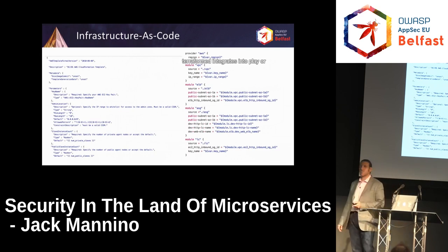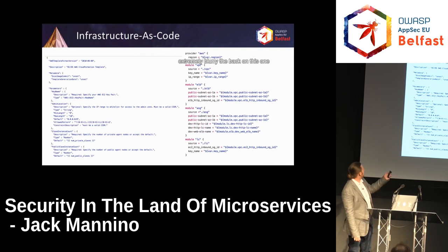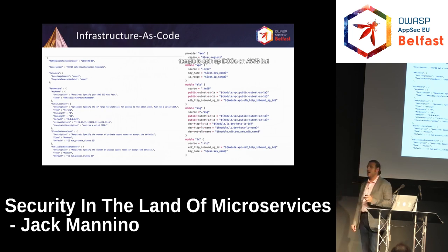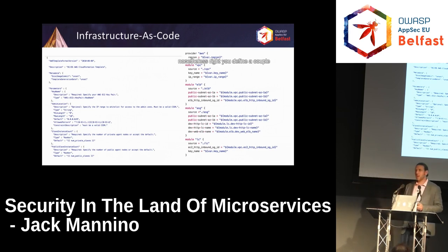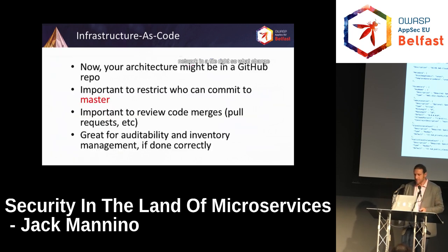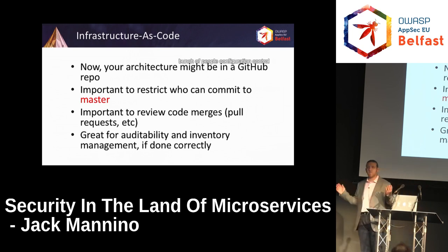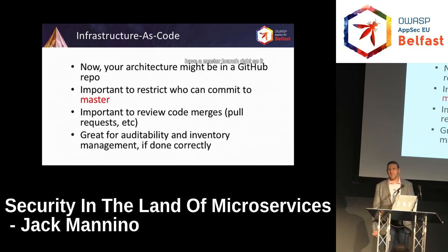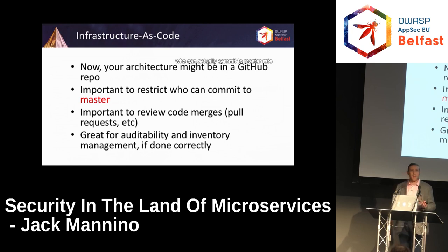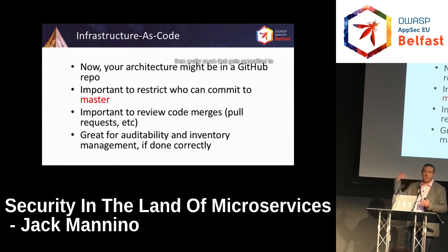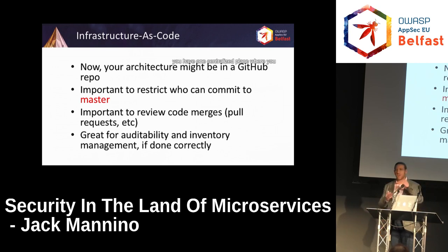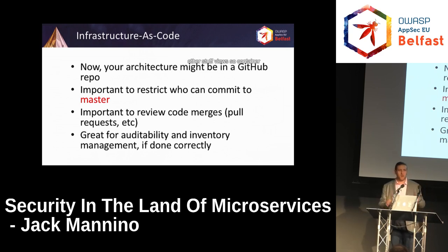Here's an example of what a Terraform or CloudFormation configuration looks like — this one is a CloudFormation template to spin up DCOS on AWS. You define a couple of nodes, what the VPC is, what the network looks like, and then you spin it up. You get a network in a file. What changes is once upon a time you had a configuration control board; now you have a master branch. It gets important to consider who can actually commit to master, whether people need to submit pull requests, because what could end up happening is you commit to master and that gets committed to prod. But it is great for auditability and change management because you have one centralized place to watch those changes, as opposed to dozens of systems tied together with different logging mechanisms and SIEMs.